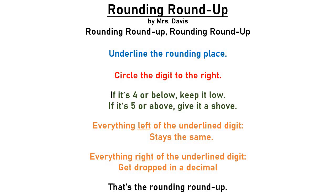We actually learned this when we were rounding whole numbers. Now we're going to take that same song and learn it for rounding decimals. So let me sing it for you — feel free to join in. I'm going to sing it a couple of times. Rounding, round up. Rounding, round up. Underline the rounding place. Circle the digit to the right. If it's four or below, keep it low. If it's five or above, give it a shove.